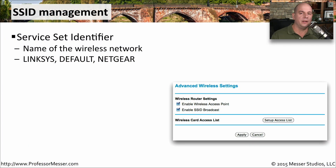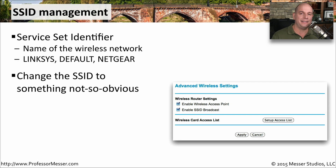When you're on a mobile device and browsing to find a wireless network, you'll see the network names pop up in a list. This is the service set identifier, or SSID. If you haven't configured a specific SSID, you may see the default — such as Linksys, Default, or Netgear. Generally, we set the SSID to be more descriptive, so people understand what the access point is providing — for example, Guest Wireless or the name of the business.